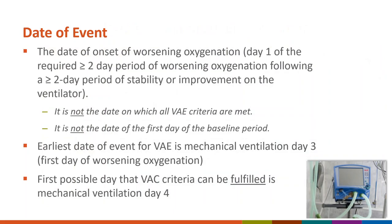Now that we have a good understanding of the baseline period and worsening oxygenation to determine if a VAC has been established, you'll want to know the date of event. The date of event is defined as the date of onset of worsening oxygenation. The earliest possible date of event is mechanical ventilation day three because you need two days for the baseline period. The first possible day VAC criteria can be fulfilled is mechanical ventilation day four because you also need two days of worsening oxygenation.